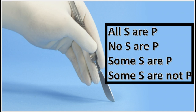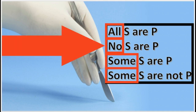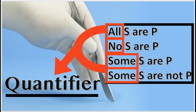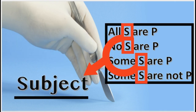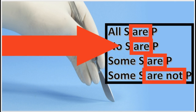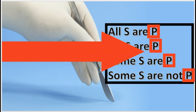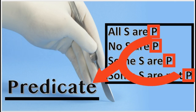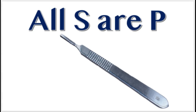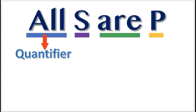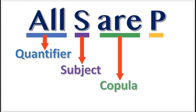We're going to dissect these categorical propositions. In these four forms, the words all, no, and some are called the quantifiers. Notice they identify a quantity — how many? Next, the letter S stands for the subject term. After that, the words are and are not, called the copula. And finally, the letter P stands for the predicate term. The categorical proposition can be dissected into these four parts: the quantifier, the subject, the copula, and the predicate.